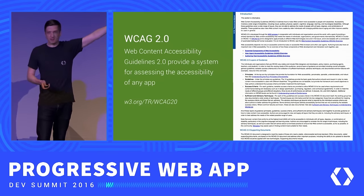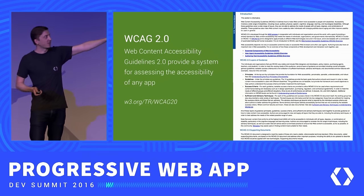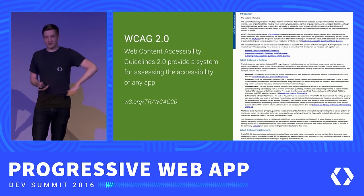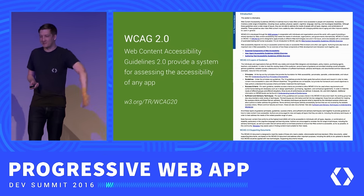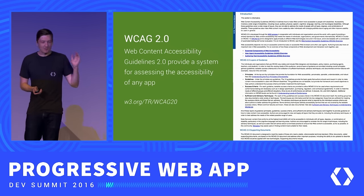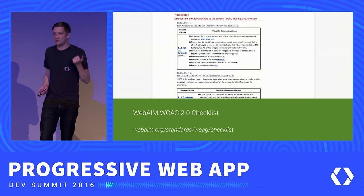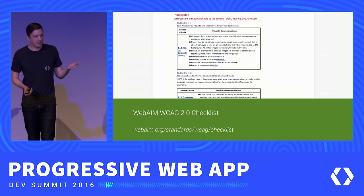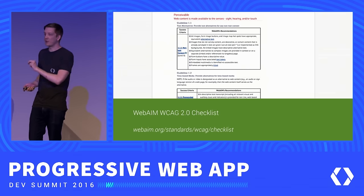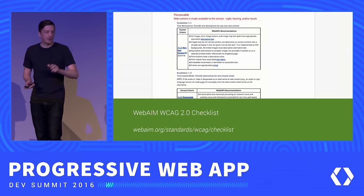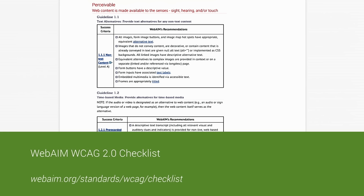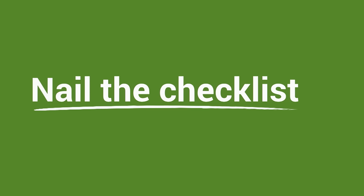WCAG is extremely comprehensive but can also be overwhelming. To help mitigate this, the WebAIM group has taken WCAG and distilled it down to a very easy-to-follow checklist targeted specifically for web content. So if you're wondering how to possibly cater to all these different users and assistive technologies, the short answer is to nail that checklist.